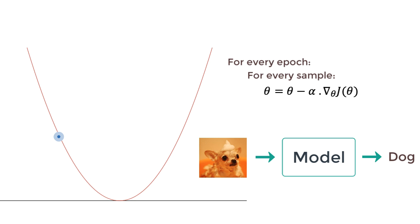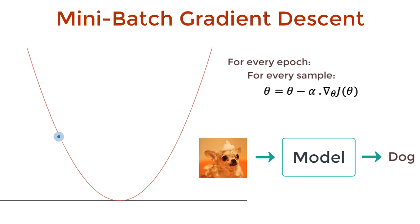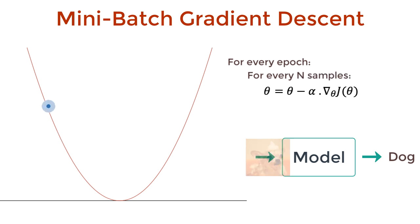Because of this, we use mini-batch gradient descent as a compromise, updating the parameters only after a few samples. Hop. Hop. Hop. Ha!